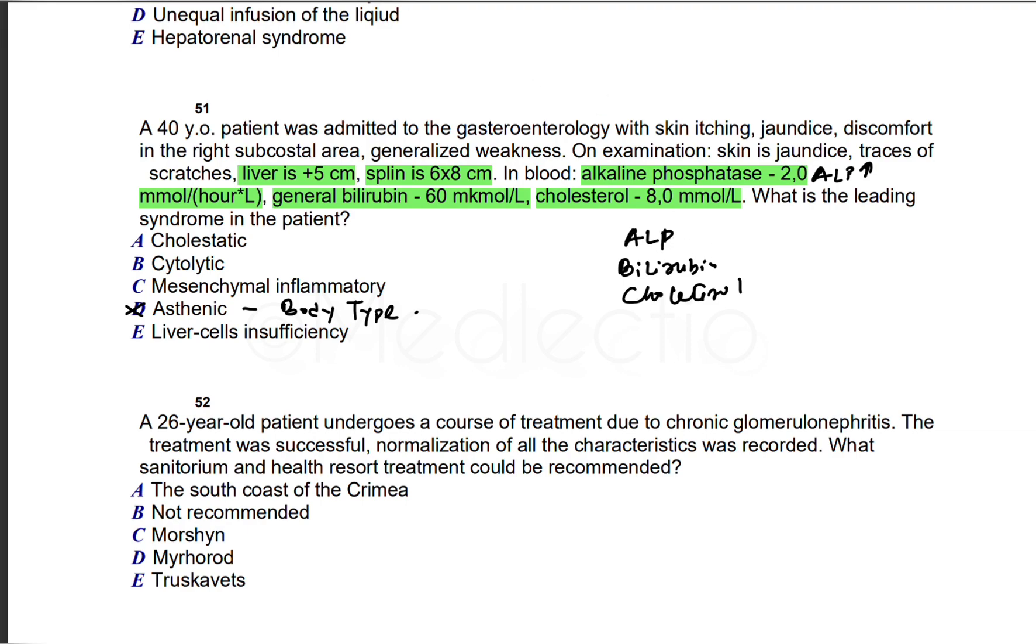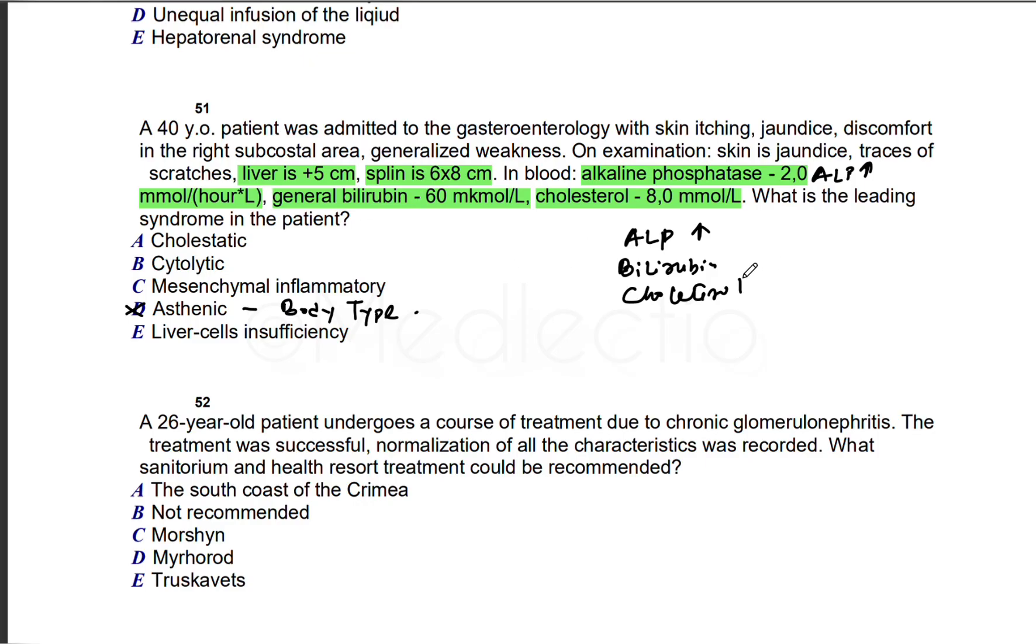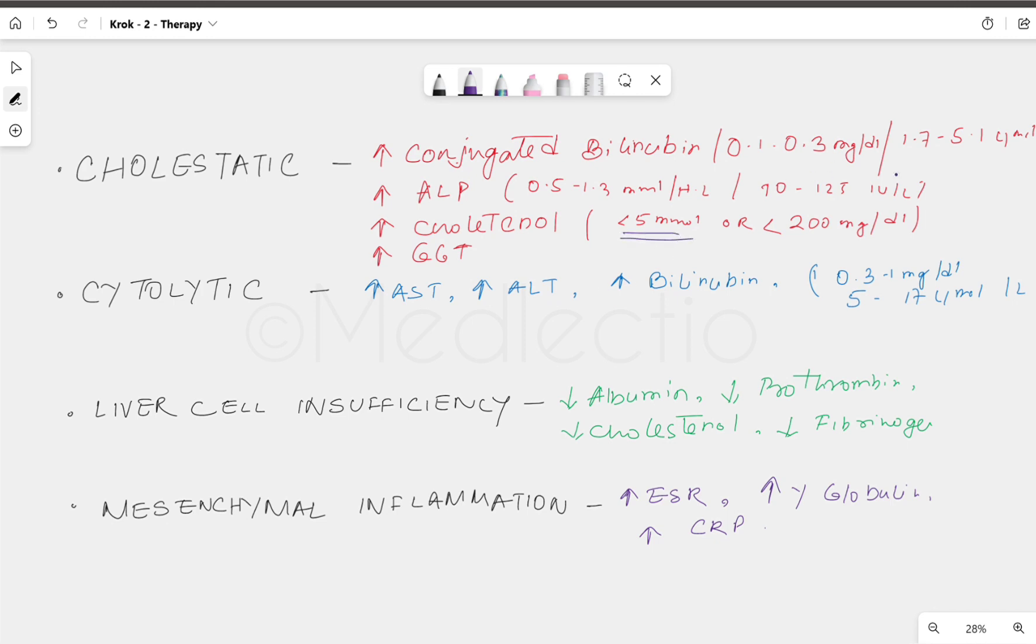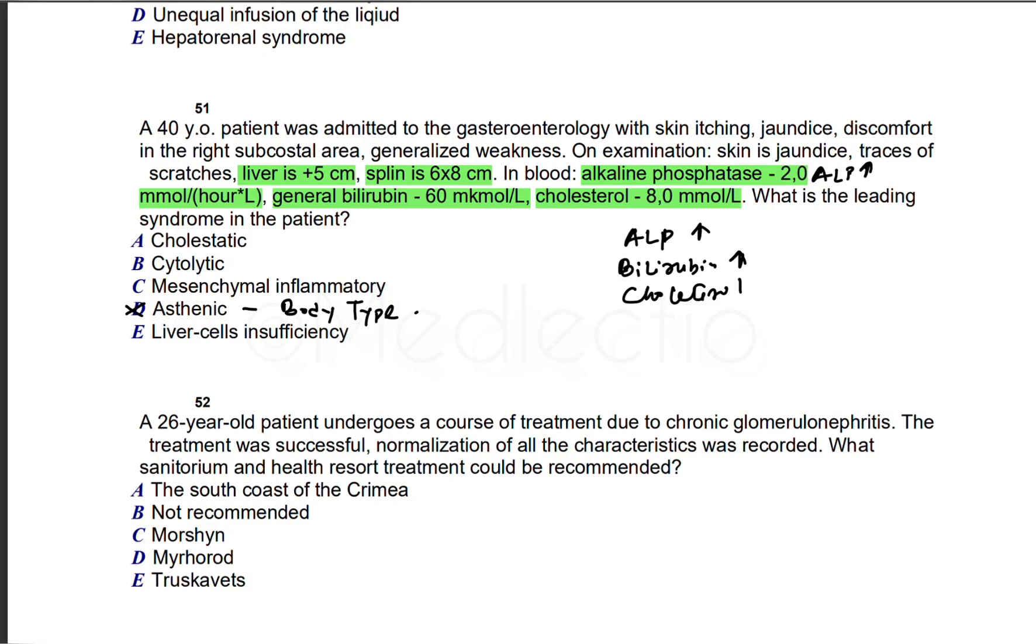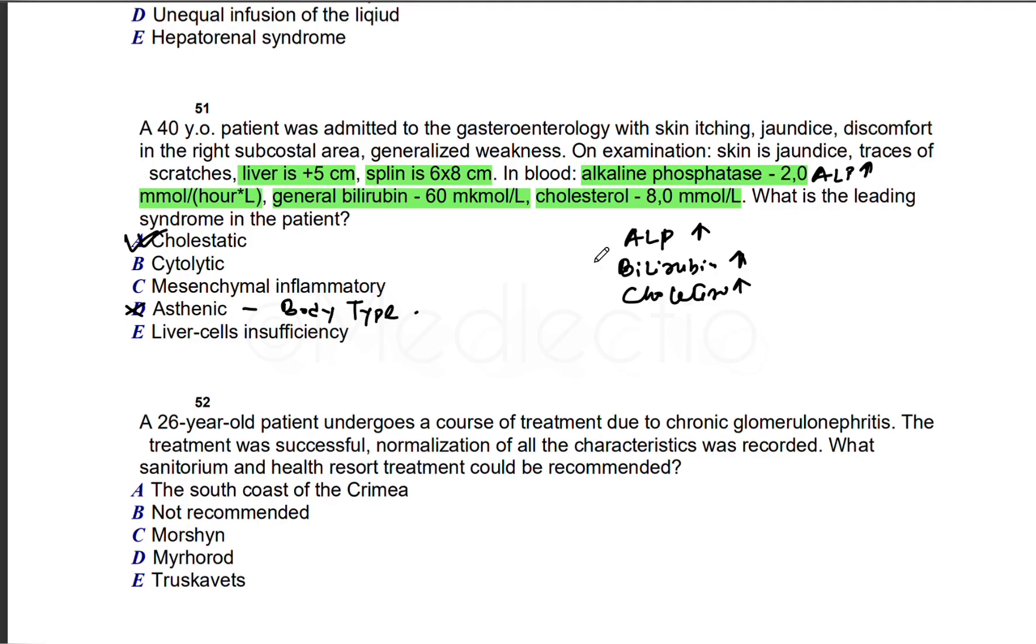Now we go back to our question. We see alkaline phosphatase is 2, which is increased (normal 0.5 to 1.3). Bilirubin is 60, highly increased (normal 5 to 17 or 20). Cholesterol is 8, also increased (normal less than 5 millimole). So ALP, bilirubin, and cholesterol all three are increased. In liver cell insufficiency, albumin and prothrombin are decreased, so it's not our answer. In mesenchymal inflammation, we see inflammatory markers, not ALP. In cytolytic, we cannot see ALP. So cholestatic with bilirubin increase, ALP increase, cholesterol increase—our answer is cholestatic.